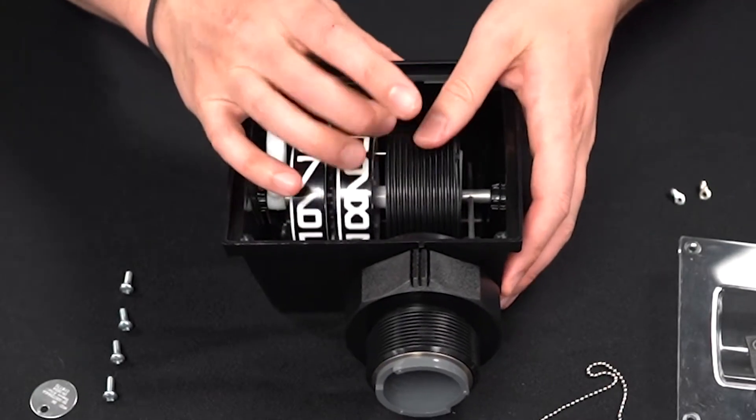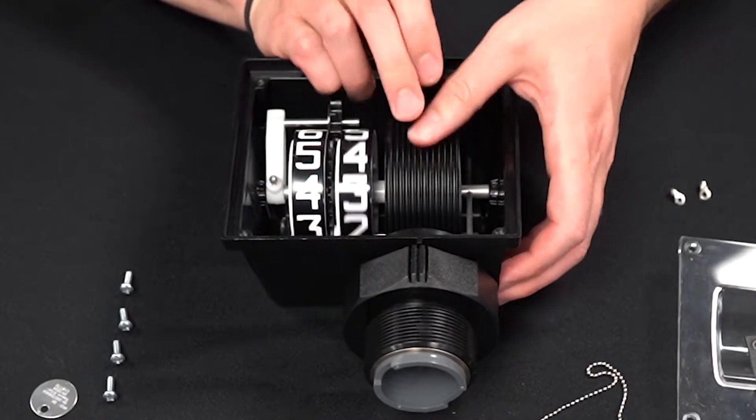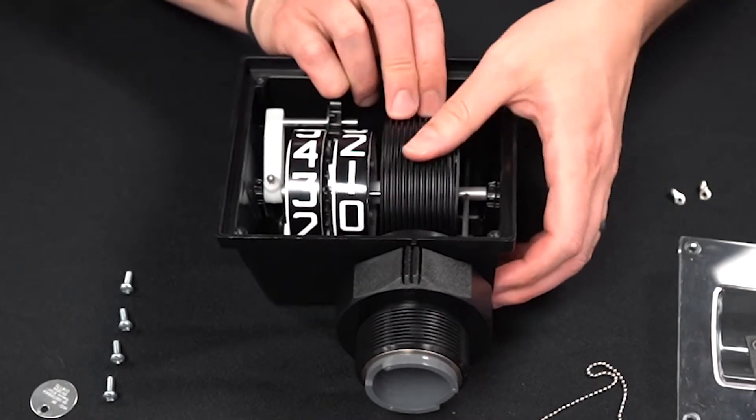Roll the pulley up until the numbers roll over double zero two times. This will create the correct amount of tension in the spring.